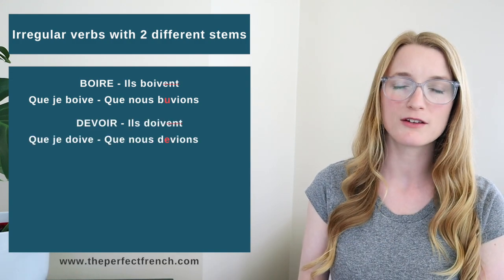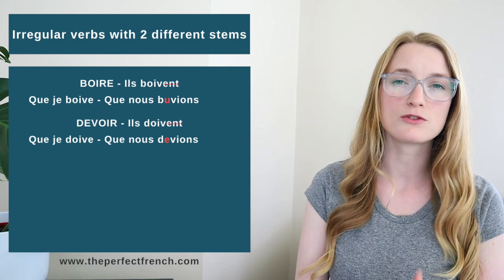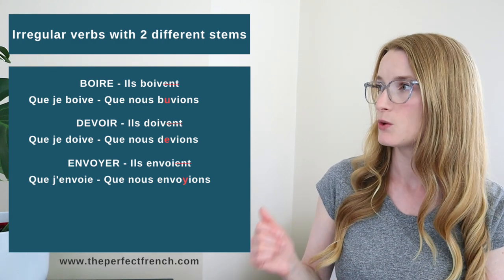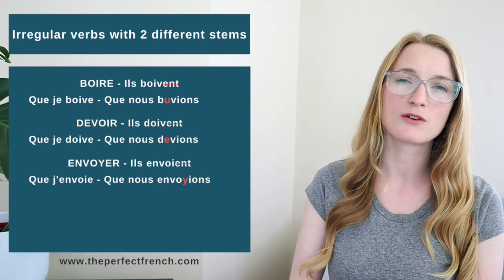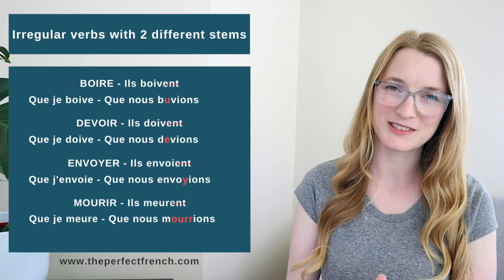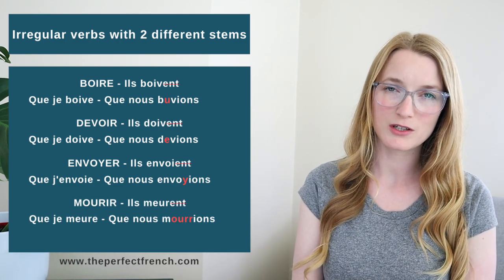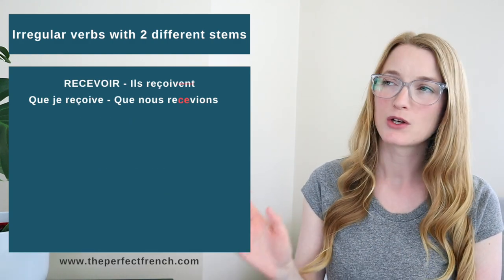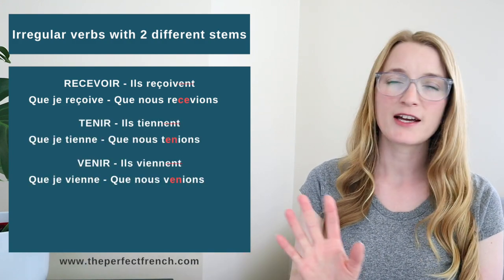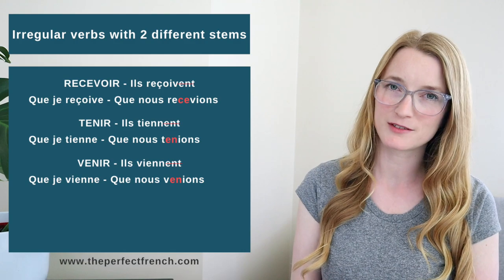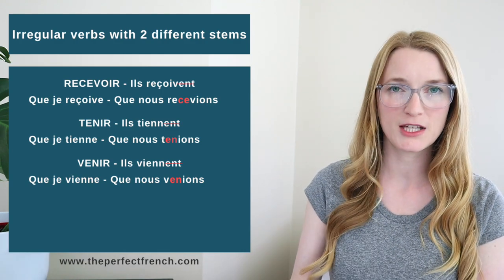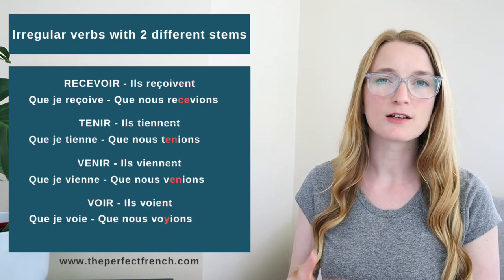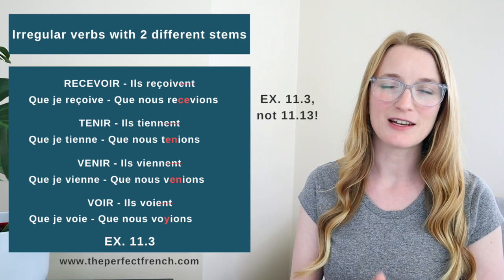Envoyer — same type as essuyer — que j'envoie, que nous envoyions. Mourir, this one is interesting: que je meure, que nous mourions. Recevoir: que je reçoive, que nous recevions. Tenir and venir — they're always together, always irregular: que je tienne, que je vienne, que nous tenions, que nous venions. Then we have voir: que je voie, que nous voyions. You can practice with exercise 11.13.